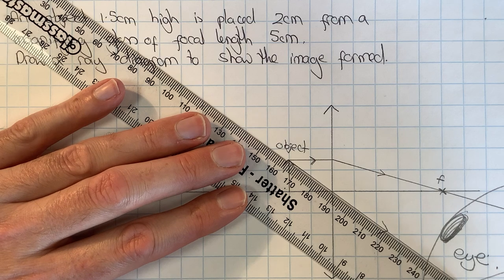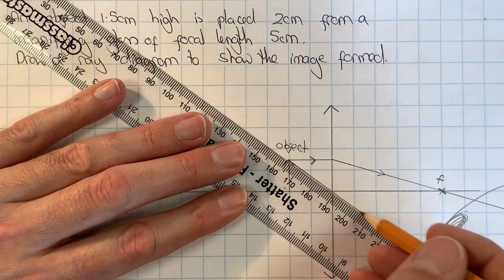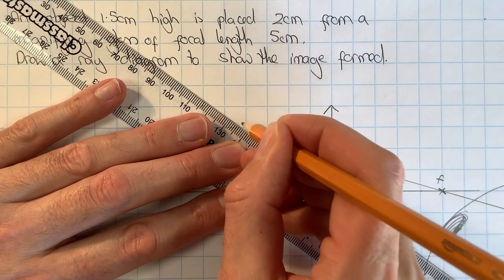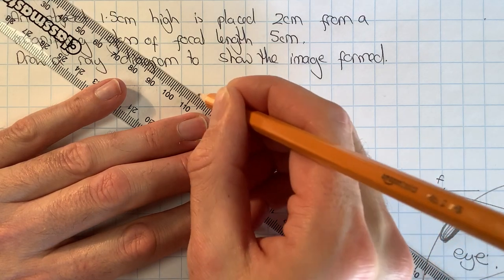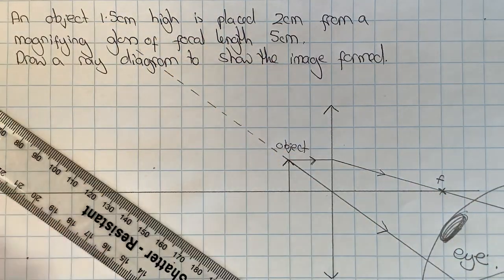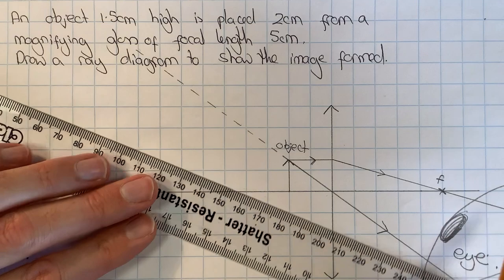So I line up my ruler with the light ray after it's passed through the lens, and then I add in dotted lines going back in the same direction, something like that.